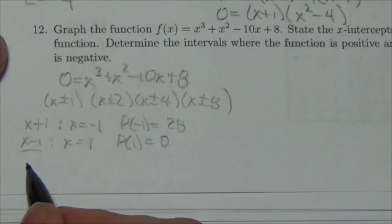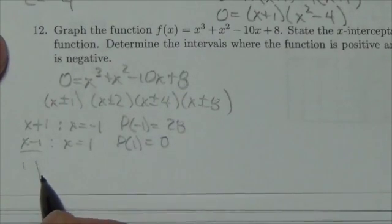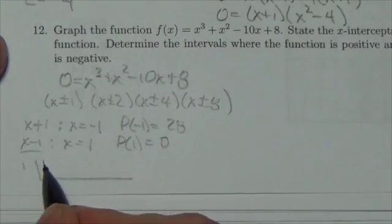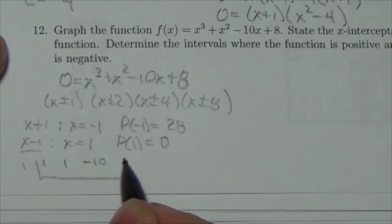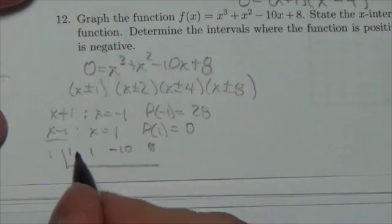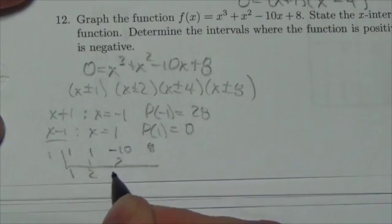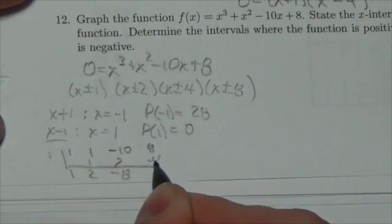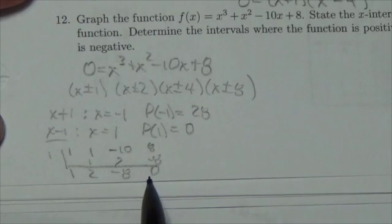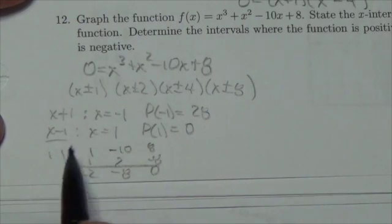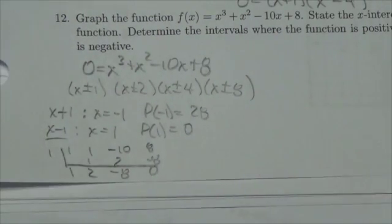So let's do some synthetic division. I'll put a 1 outside here. So I've got 1, 1, negative 10, 8. That's my coefficients here. So bring down the 1, multiply, add, multiply, add, multiply, add. And I'm getting a 0 as a remainder, which is exactly what I was expecting, because I knew that x minus 1 was a factor.